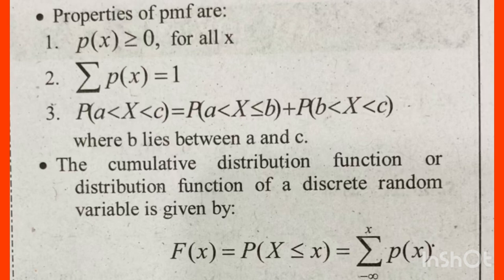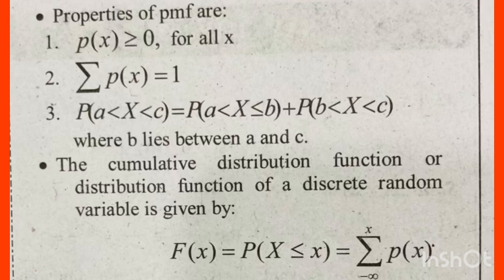The PMF has a few important properties. First, P of X is greater than or equal to 0. Second, sigma P of X is equal to 1. Also, P of a less than x less than or equal to b, plus P of b less than x less than c.